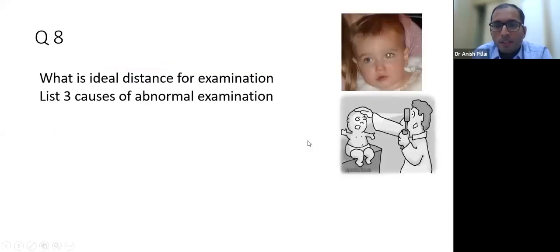Coming to the next question. Can you name the test and what is this person doing? Some causes for abnormal examination. Red reflex. How far away from the baby you have to stand? One meter? Can somebody say how much? And also tell me some reasons for abnormal red reflex - that is easier. The distance - 18 inches or 45 centimeters is the ideal distance.